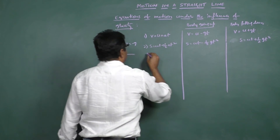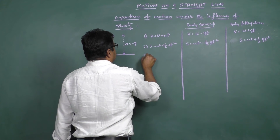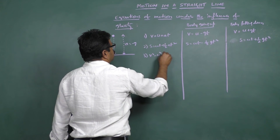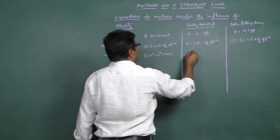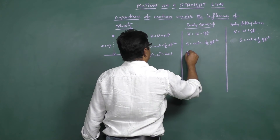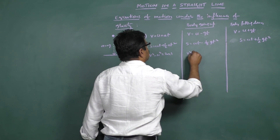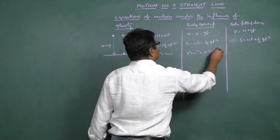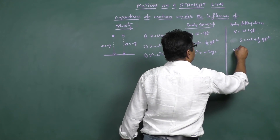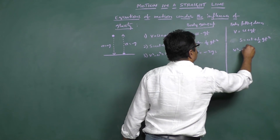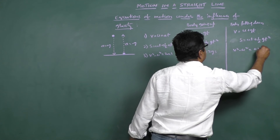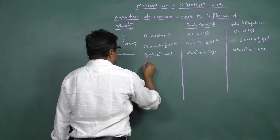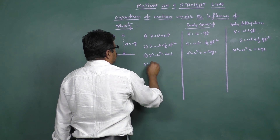The third equation is v² minus u² = 2as. When moving upwards, this becomes v² minus u² = minus 2gs. And when moving downwards, it becomes v² minus u² = plus 2gs.